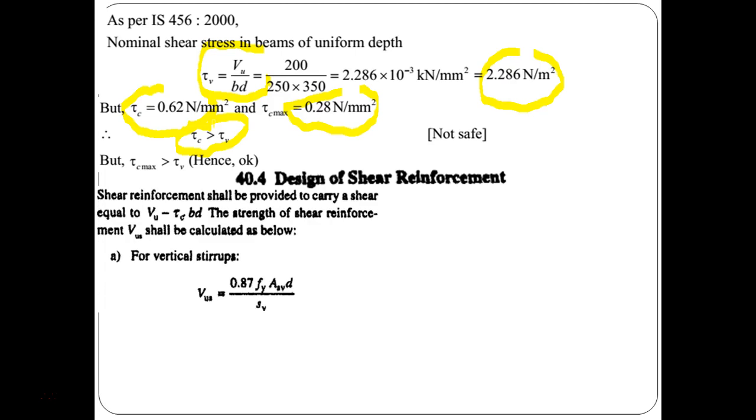So, if we just look at the shear reinforcement clause, it says that shear reinforcement shall be provided to carry a shear equal to VU minus tau C multiplied by BD. So, the strength of the shear reinforcement VUS shall be calculated as follows that is for vertical stirrups 0.87 Fy into ASV D divided by SV.